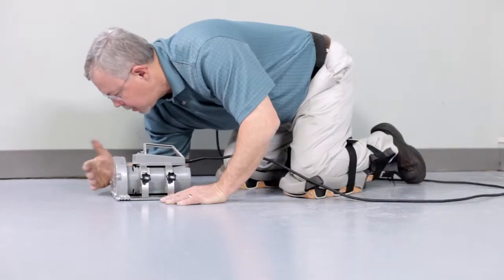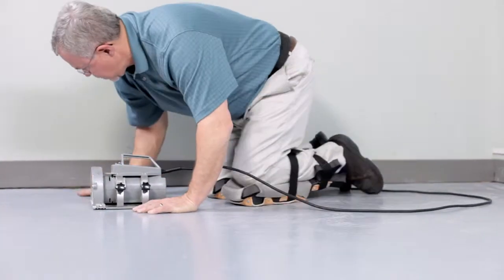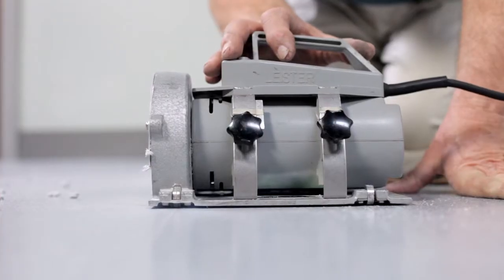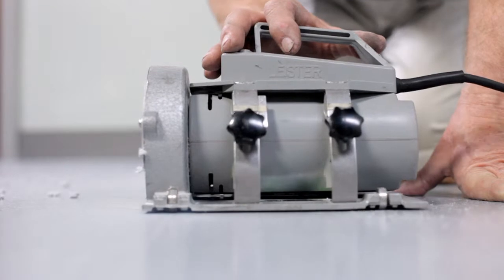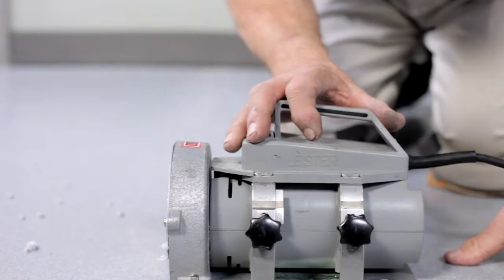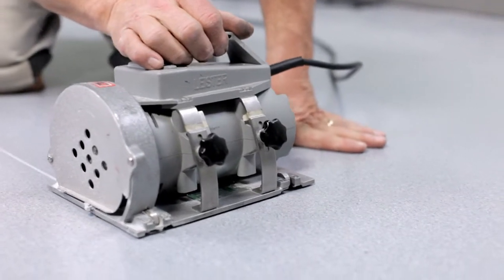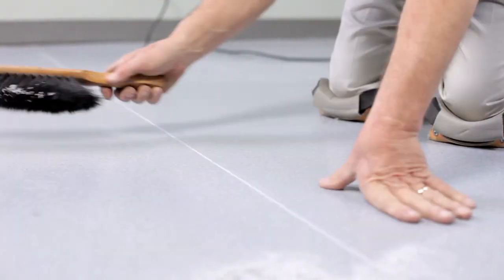Next, the seam cut must be grooved using either a power or hand groover. It's important that the groove be centered on the seam cut and be approximately two-thirds the thickness of the flooring product. Sufficient time should be allocated so that the seams can be grooved and welded in the same day to prevent contamination of the groove.